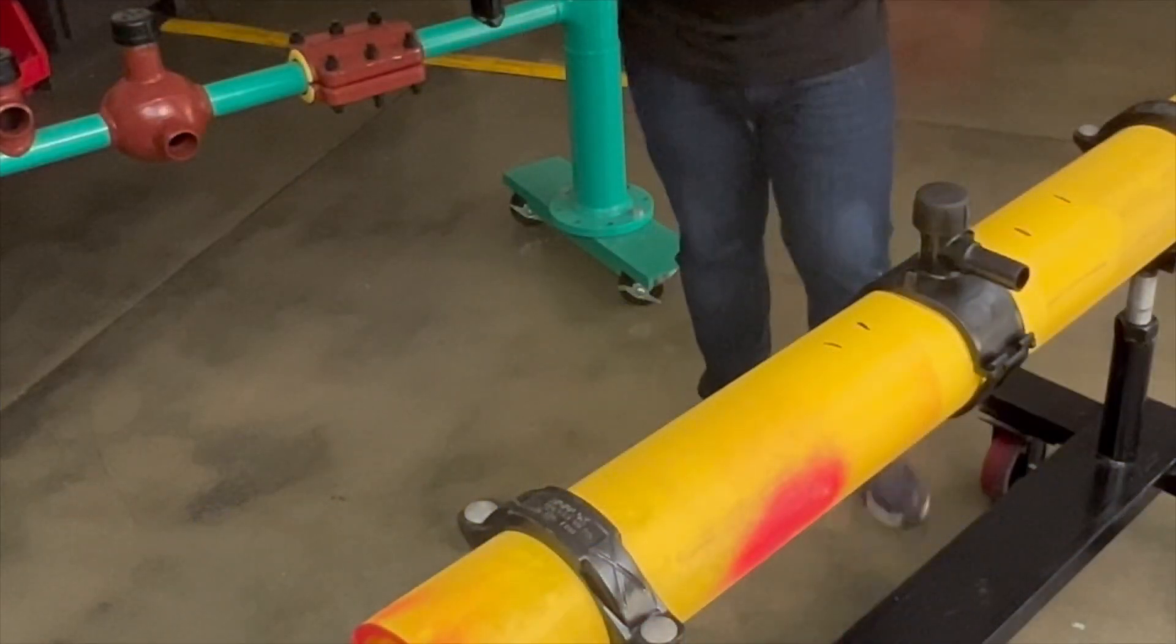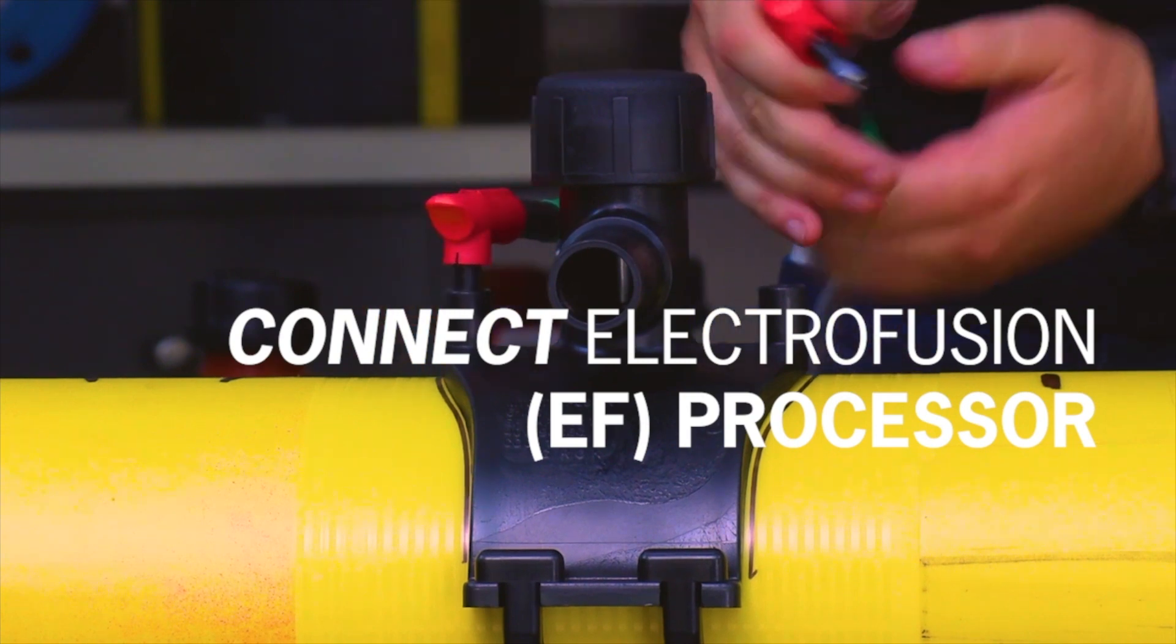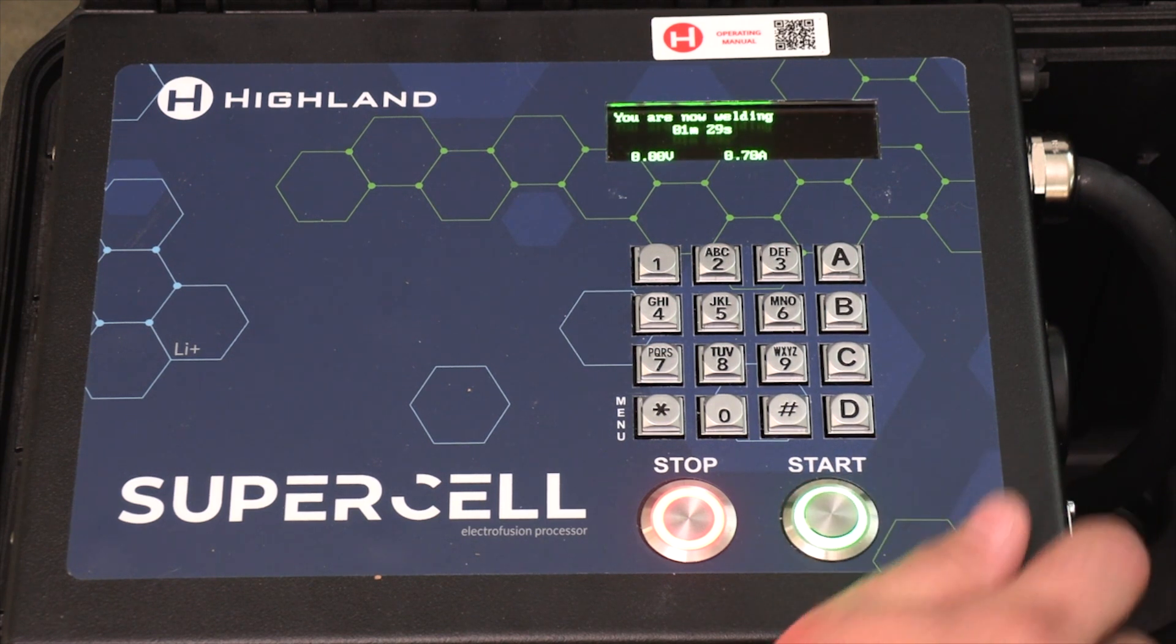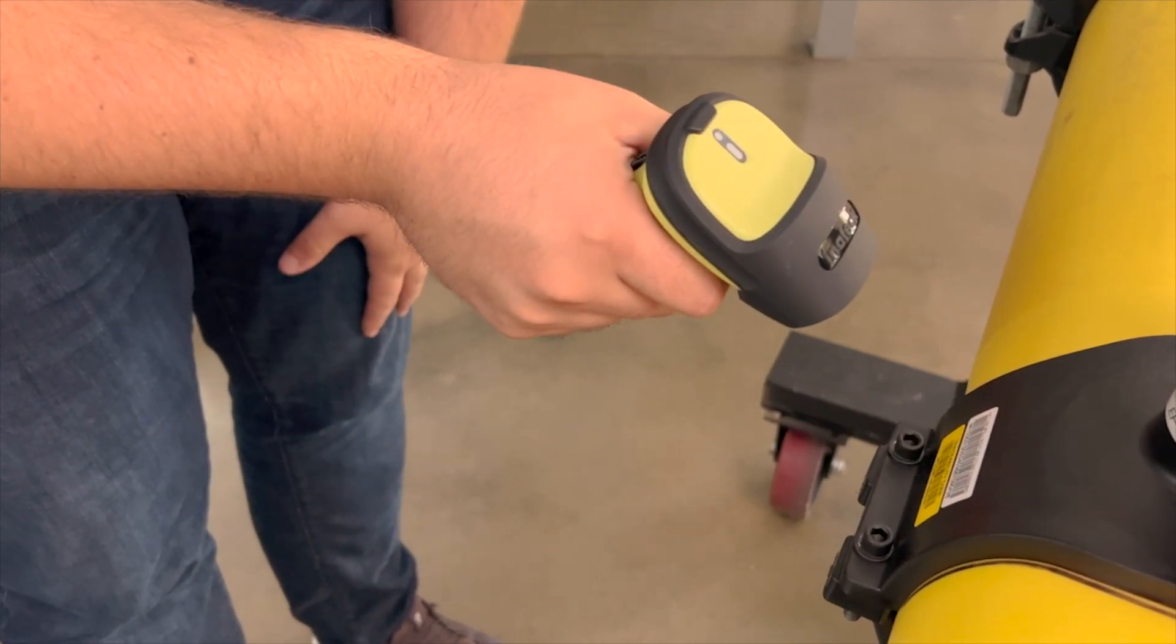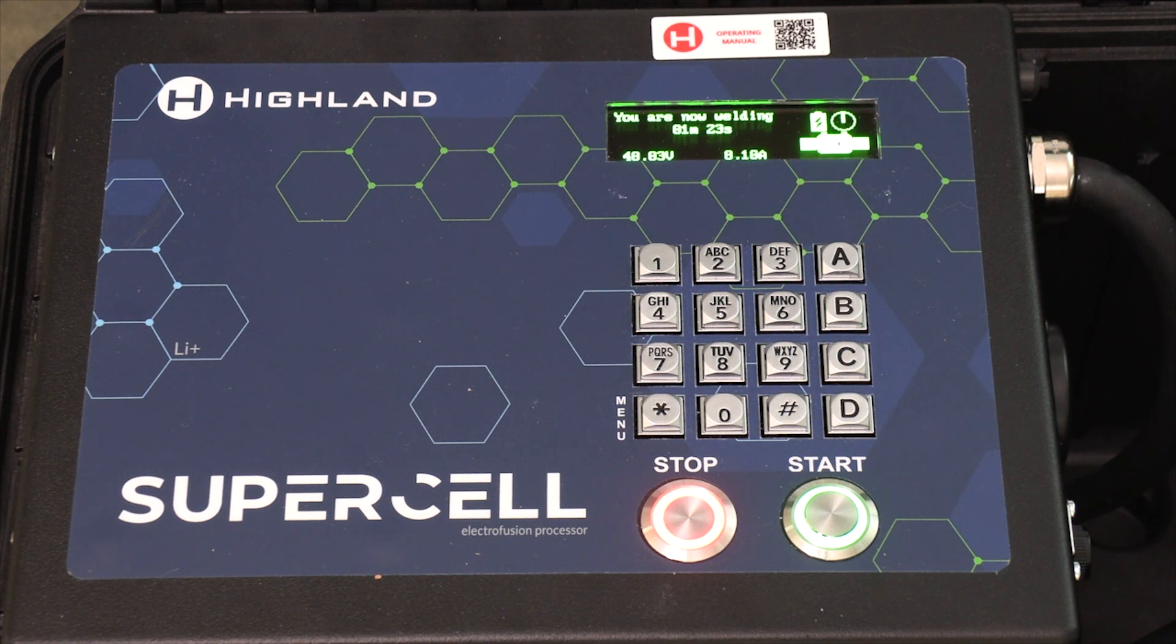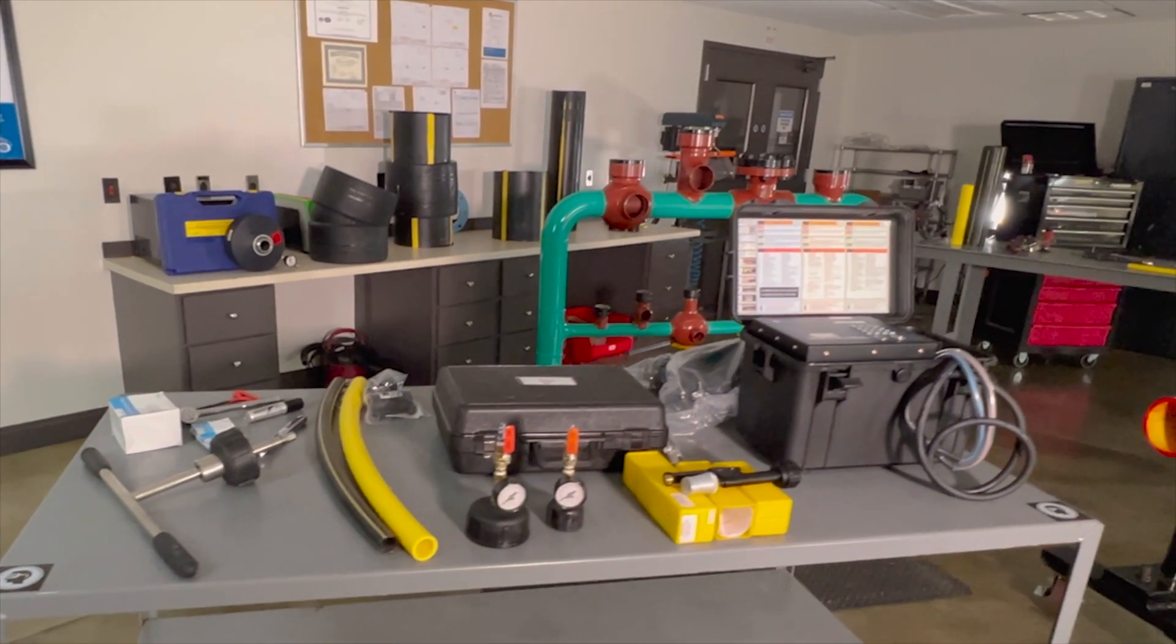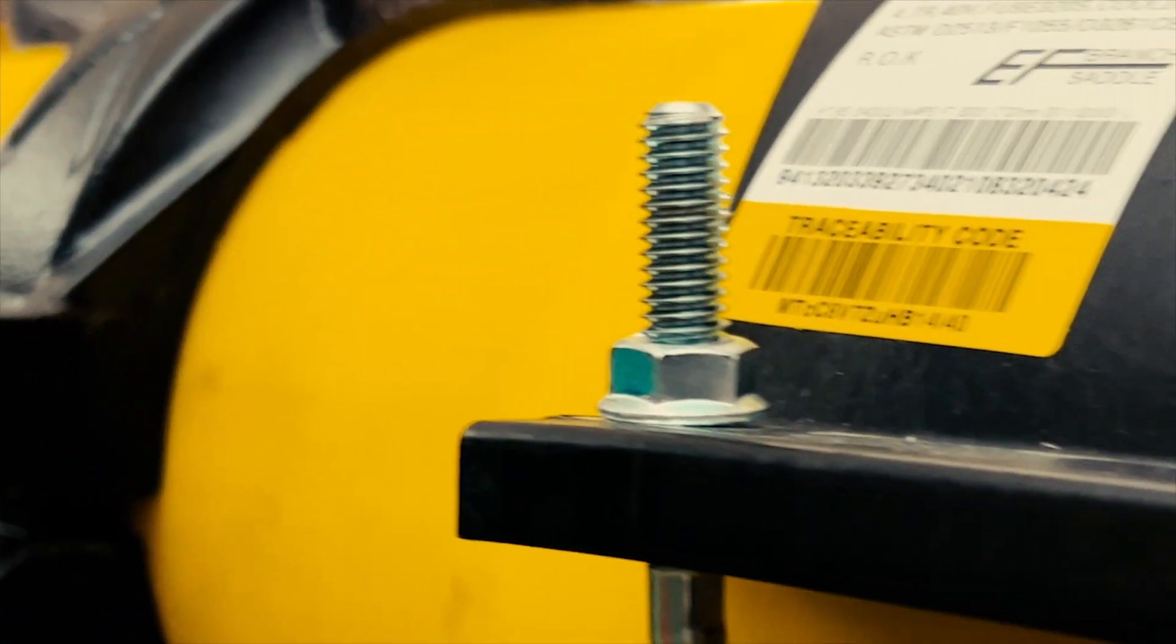The next step is to connect your electrofusion processor to the 4.7 millimeter terminals on the tapping tee, select fusion mode and start the electrofusion process according to your operator's manual. Make sure to verify that the fusion time on the fitting label matches the time displayed on the processor. Most processors will make minor adjustments to fusion time to account for varying ambient temperatures but the times will still be similar. All MTD electrofusion fittings are capable of fusing in dedicated or resistor ID mode, but we recommend fusing in barcode mode wherever possible.